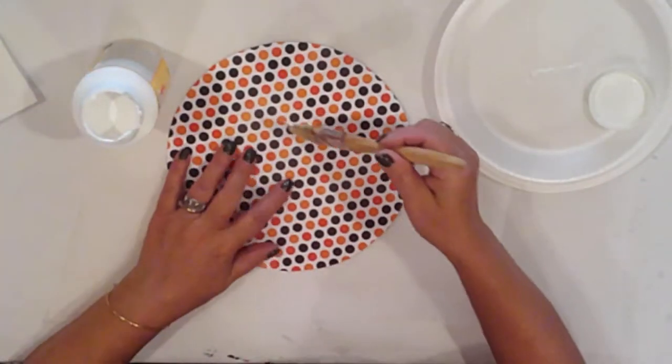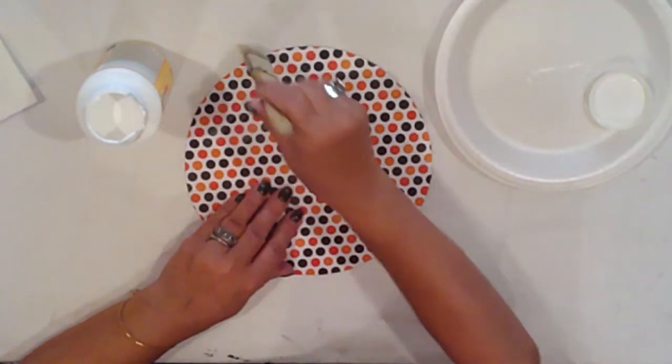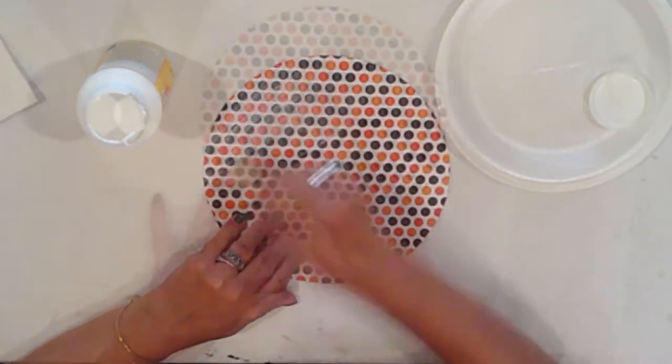But before I make the cone, I'll cover it with Mod Podge. I do this to make the surface more paintable and to strengthen it.